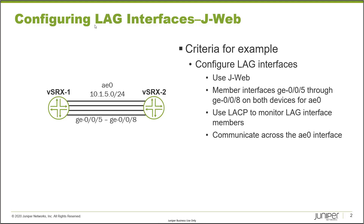Between vSRX1 and vSRX2 there are four interfaces — ge-0/0/5 through ge-0/0/8 — and those interfaces are going to be member interfaces for the LAG. The LAG interface will be AE0, and we're going to use the 10.1.5.0/24 subnet for that AE0 interface. We also want to use LACP to monitor the LAG interface members, and then we'll test this by communicating across the AE0 interface.